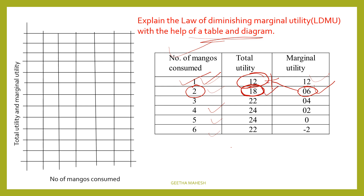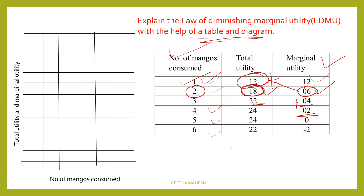From the marginal utility table, total utility is calculated by adding each unit's marginal utility. 12, then 12 plus 6 is 18, 18 plus 4 is 22, 22 plus 2 is 24, 24 plus 0 is 24, then 24 minus 2 is 22. So marginal utility for the first mango is 12, and it decreases with each unit.